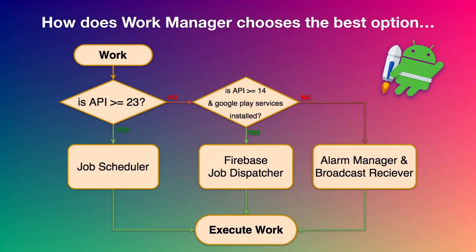Let's see how WorkManager chooses the best option — between Job Scheduler, Firebase Job Dispatcher, or Alarm Manager and Broadcast Receiver. Suppose you have a work. First, it checks if the API level is greater than or equal to 23. If it is, it hands off the task to Job Scheduler and executes the work. If not, it checks whether the API level is greater than or equal to 14, Google Play services is installed, and the Firebase Job Dispatcher library is also installed. If all three requirements are met, it hands off the task to Firebase Job Dispatcher and the work is executed. Otherwise, it uses plain old Alarm Manager and Broadcast Receiver.